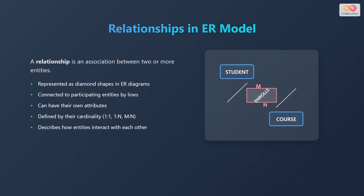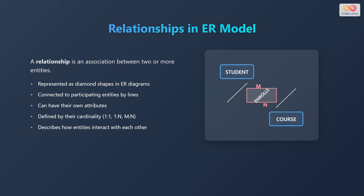A relationship is an association between two or more entities. Relationships are represented as diamond shapes in Entity Relationship Diagrams, connected to participating entities by lines. Relationships can have their own attributes, and are defined by their cardinality such as one-to-one, one-to-many, or many-to-many. For example, the relationship between student and course entities is enrollment.